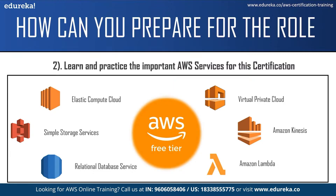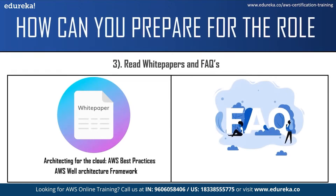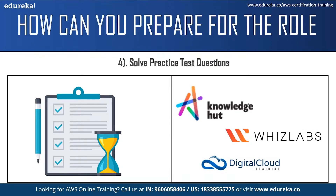You can practice these services using an AWS free tier account, which allows you to access over 85 AWS services for free — just submit the required information and you can start practicing. Moving on, refer to white papers and frequently asked questions. White papers give you technical knowledge about various AWS concepts and services. Two of the best white papers for the certification are Architecting for the Cloud: AWS Best Practices and the AWS Well-Architected Framework. The FAQs will also help you clear doubts regarding the certification. You can also solve practice test questions on websites such as Knowledge Hut, Whizlabs, and Digital Cloud Training.